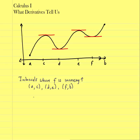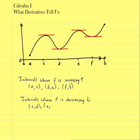Now let's look at intervals where F is decreasing. I'll use a shorthand arrow-down notation for decreasing. The function is decreasing from C to D, and decreasing again from E to F.